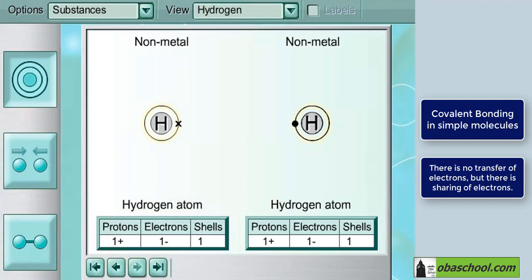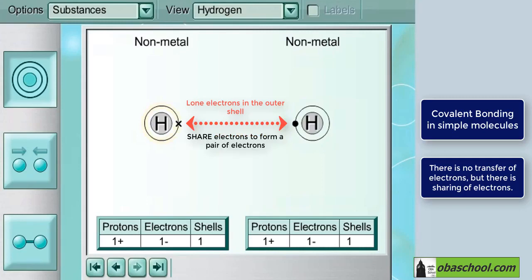You know that each atom seeks for the electrons to be in pairs. The outer electrons in hydrogen atoms are lone electrons - they are not pairs, they are not two electrons. And that is why they need to share the electrons in order to form a pair.